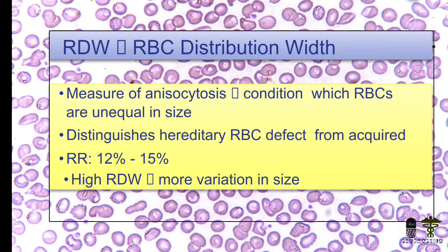RDW — what is the meaning of RDW? In the CBC, you can see the term RDW. RDW means RBC distribution width, which is a measure of anisocytosis. Anisocytosis is a condition in which RBCs are unequal in size. They are not equal in shape and not in the original shape. RDW distinguishes hereditary RBC defects from acquired ones.